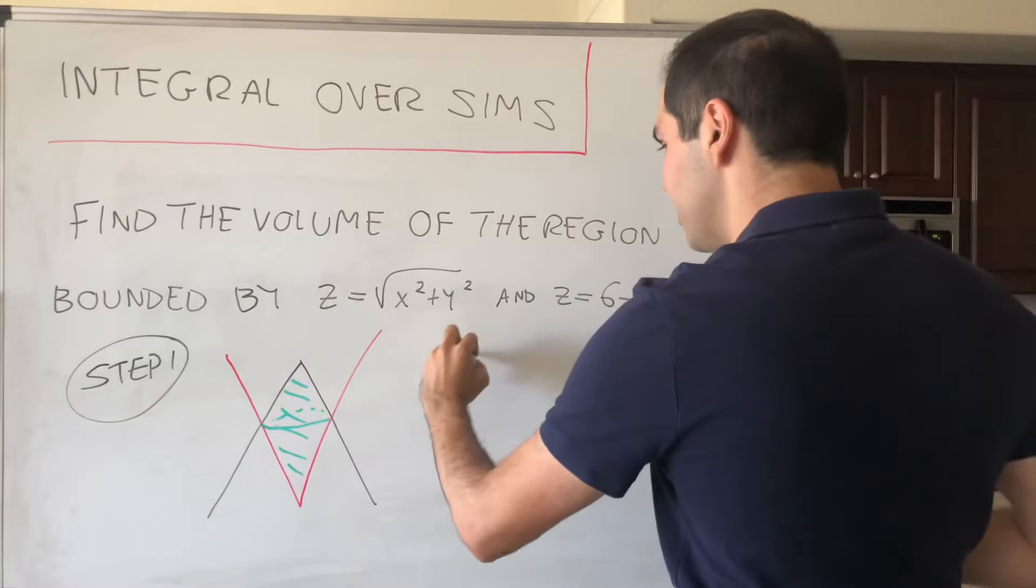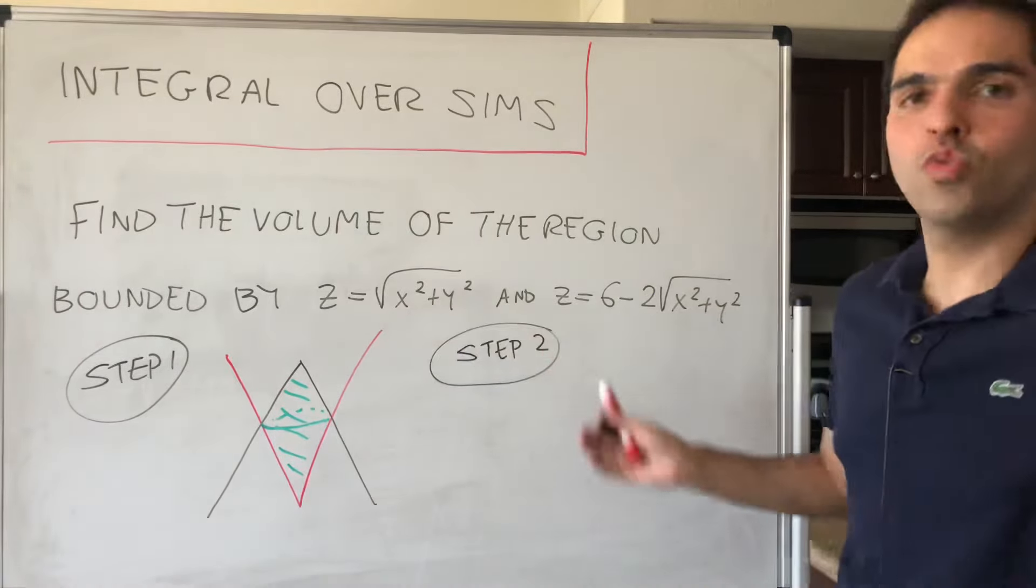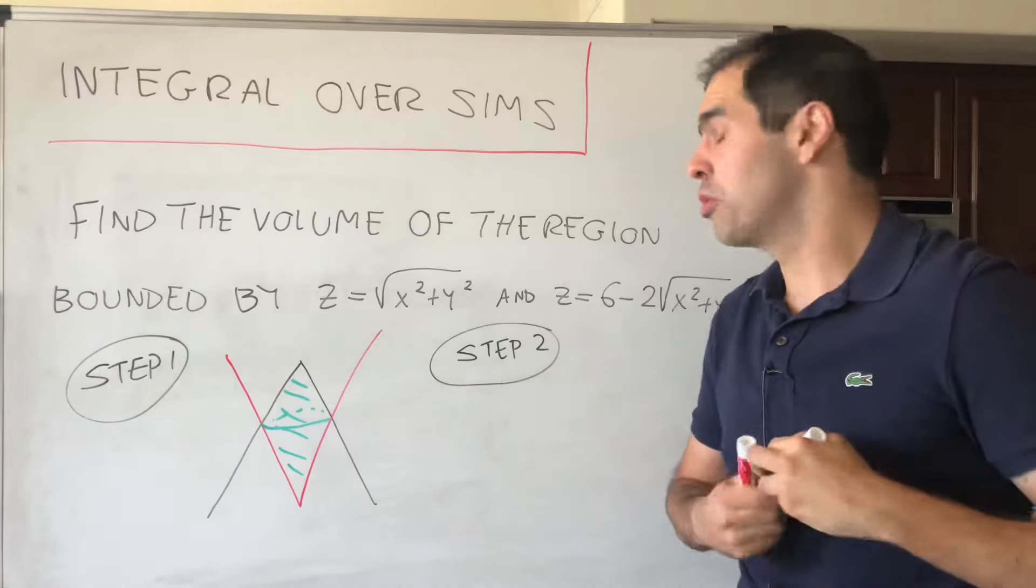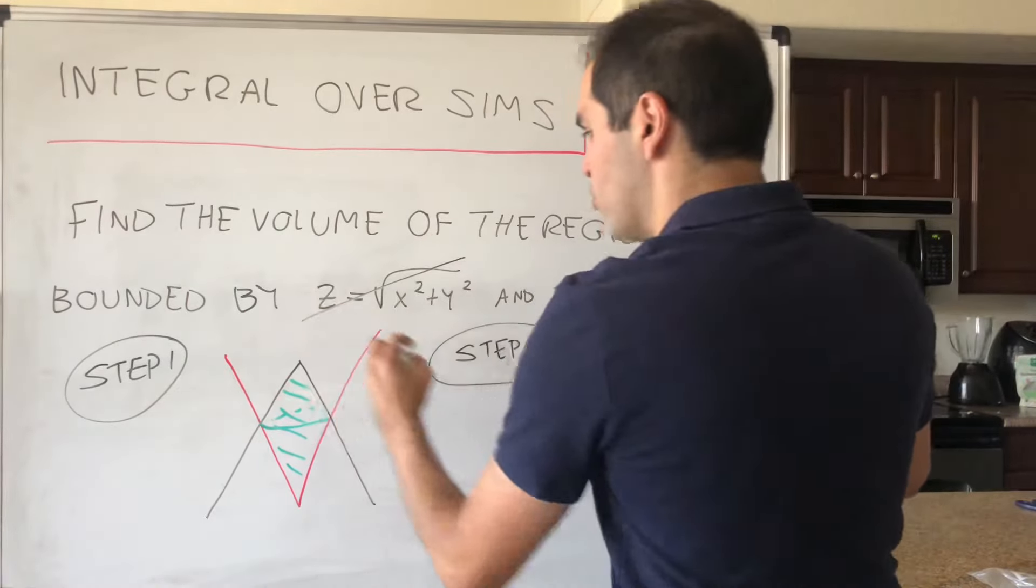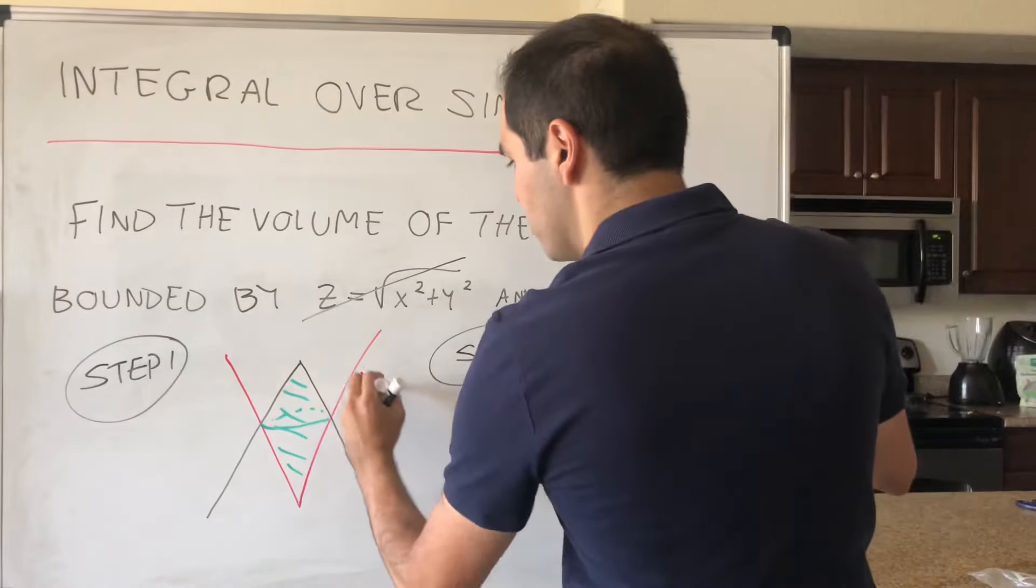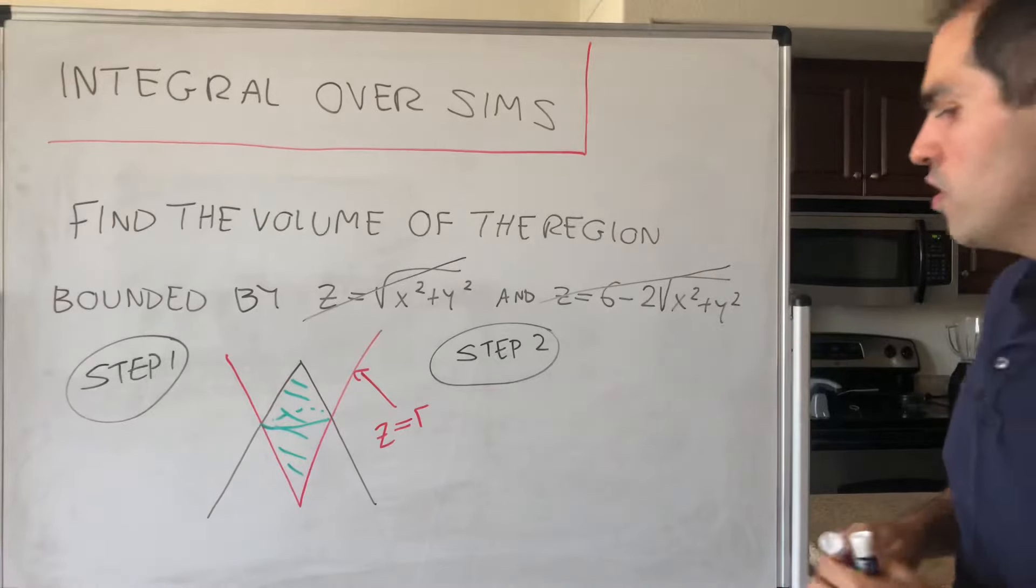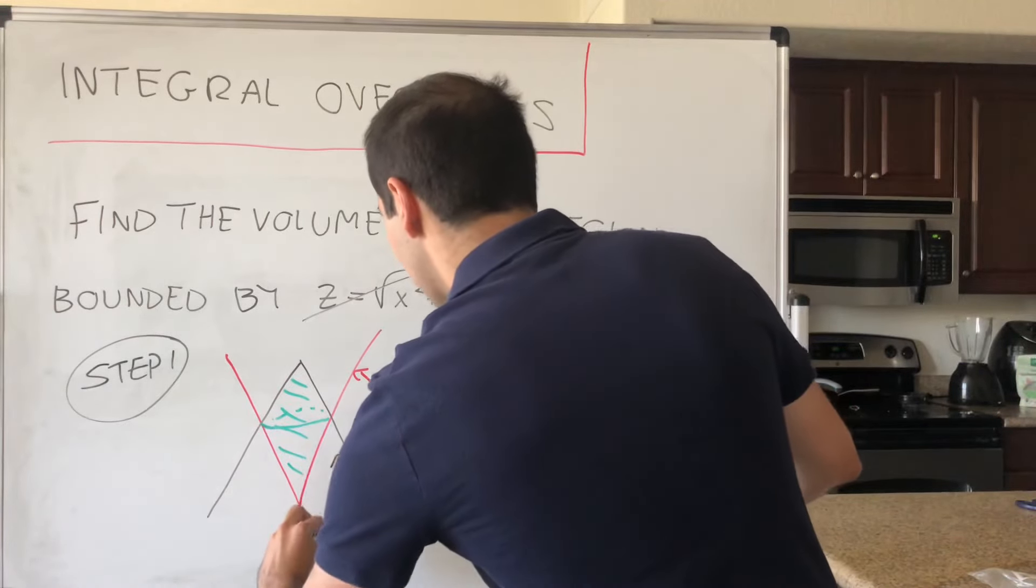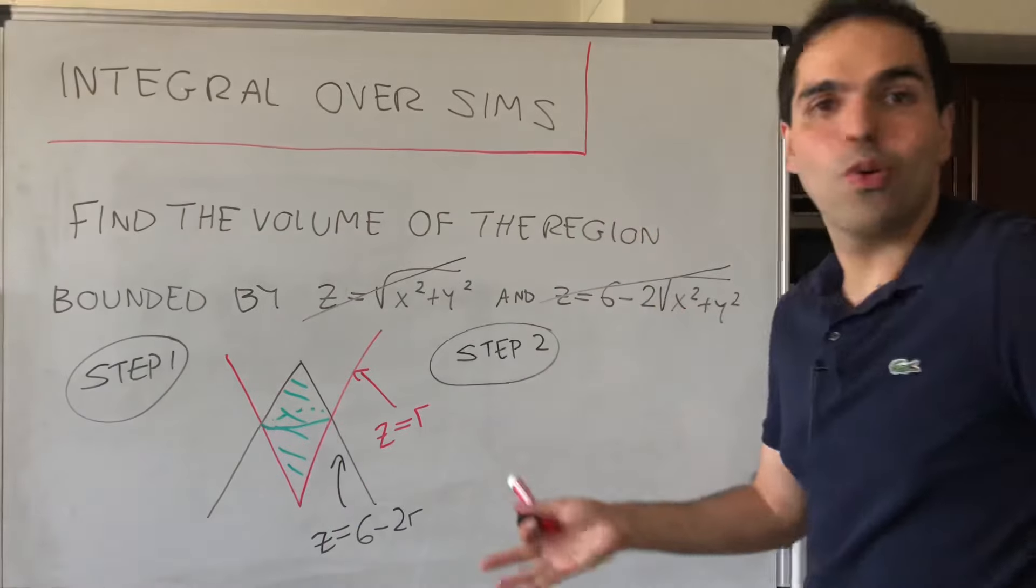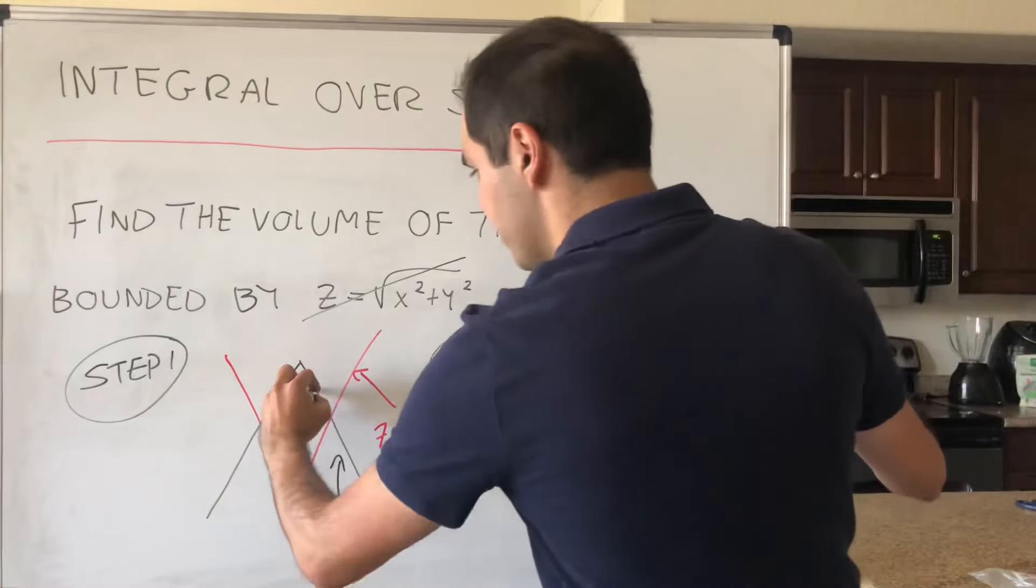The second step is to find inequalities. And at this point, I want to remark, we see square root of x squared plus y squared. Well, this just screams to use cylindrical coordinates. So, in particular, let's transform those two things into cylindrical coordinates. Well, z equals square root of x squared plus y squared becomes z equals r. And then z equals 6 minus 2 square root of x squared plus y squared, that is z equals 6 minus 2r. So, it's basically polar coordinates, but in three dimensions. And with this, we can already find our first inequalities, namely the one for z.